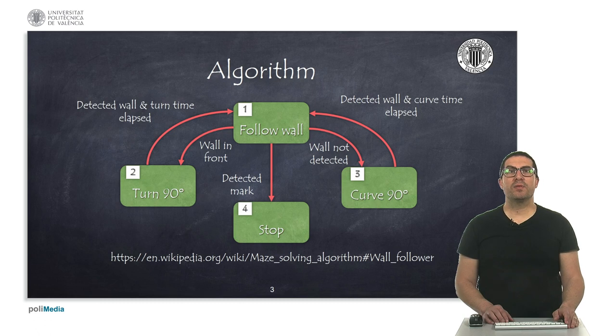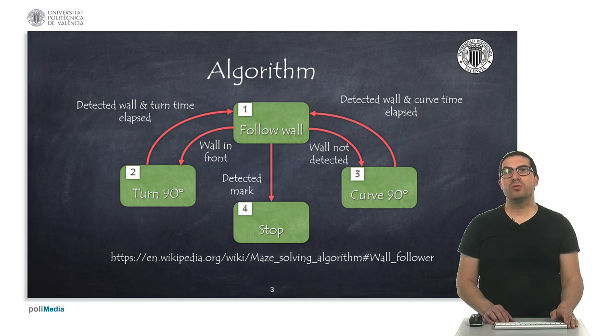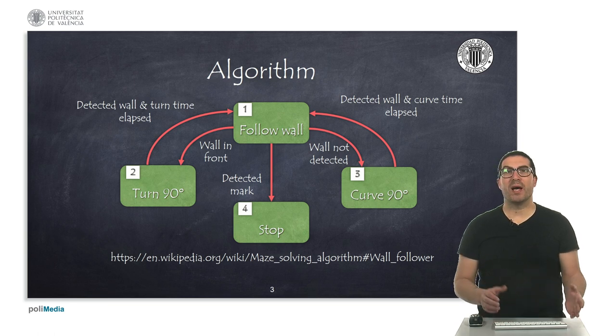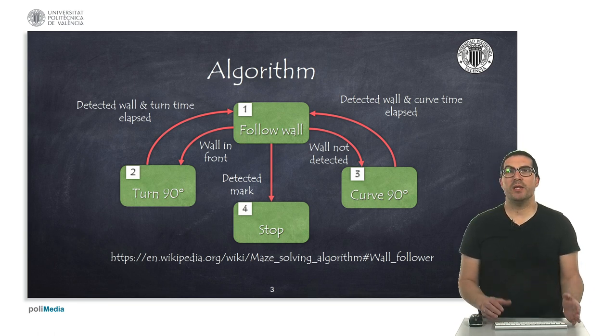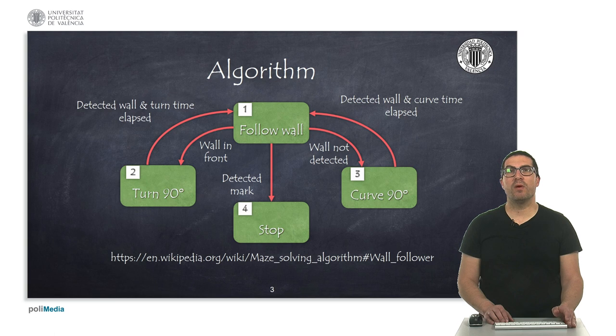The algorithm for solving a maze has four possible stages. The robot will change from one stage to another according to the conditions indicated here. These stages are also known as states where the robot is. In the first state, the robot will perform the indicated action which will, in this case, be following a wall.